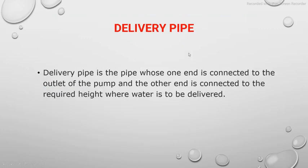The delivery pipe is the pipe whose one end is connected to the outlet of the pump and the other end is connected to the required height where the water is to be delivered.